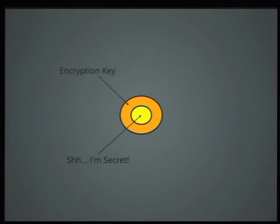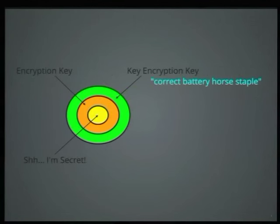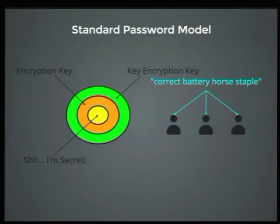So what do we do in the case of compromised keys? We actually wrap this in another key. We have the encryption key which protects the data itself, and then we have a key encryption key which protects the encryption key. If the outer key is compromised, we can just change the outer key without having to change the inner key — so you don't have to re-encrypt your data.